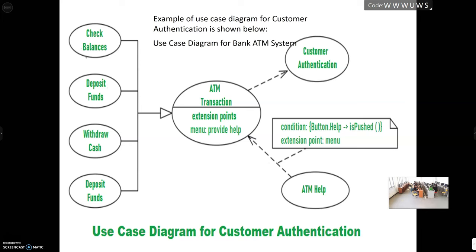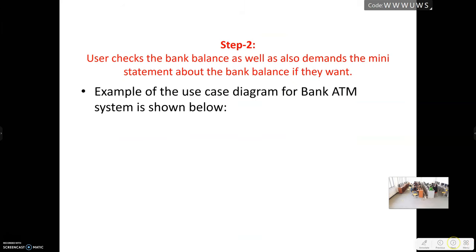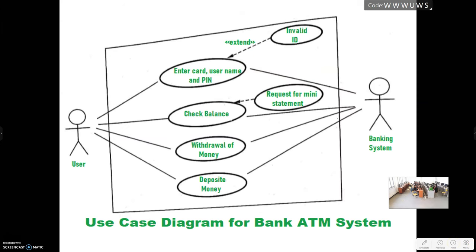The ATM use case diagram for the customer application. The next diagram — user. The ATM is used by the user who provides an intercard. The user enters their username and PIN. If the card is invalid or the ID or passport is invalid, an error is returned.